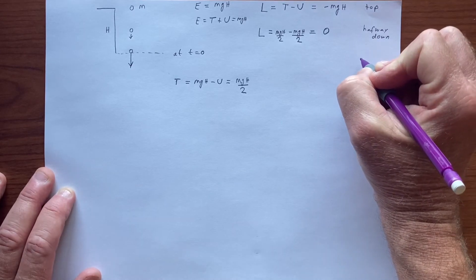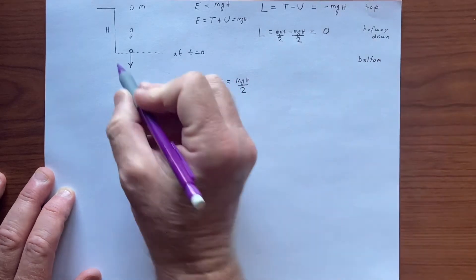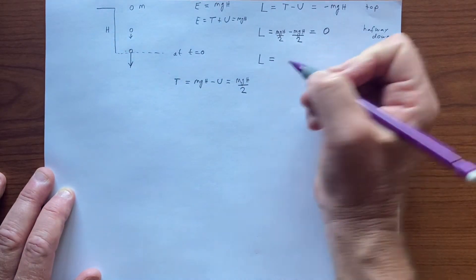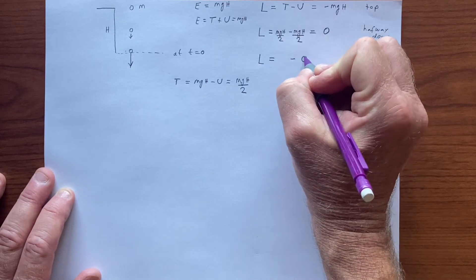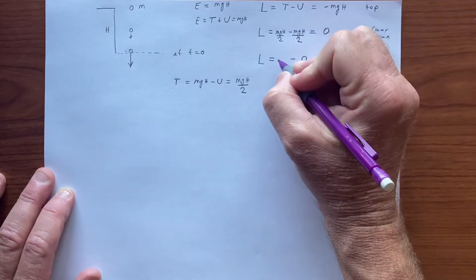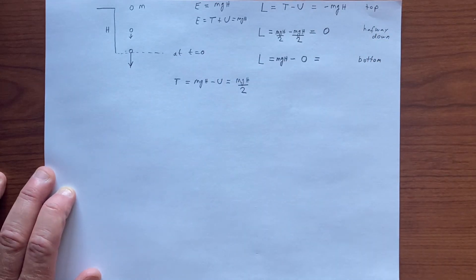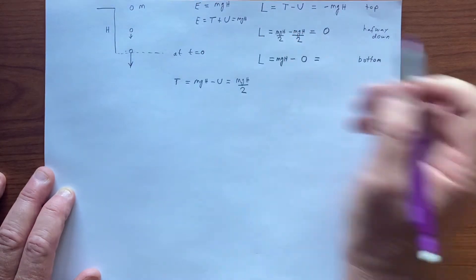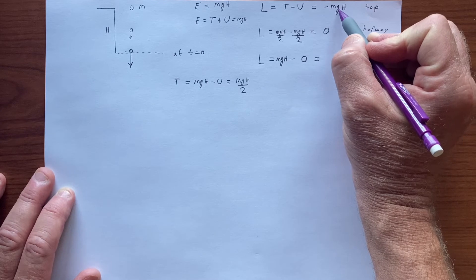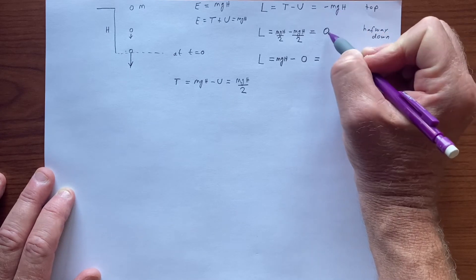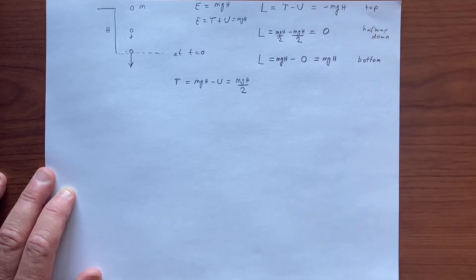And if we consider this at the bottom, when the object hits ground level, then this L quantity, the potential energy is zero, so we have minus zero, and all of the energy must be in kinetic form, so this must be mgh. So this L quantity goes from some initial negative value through zero and to a positive value.